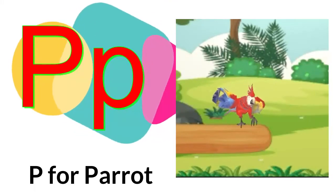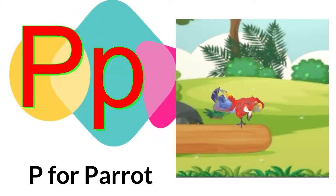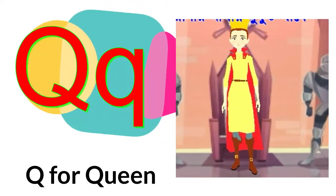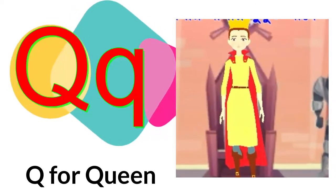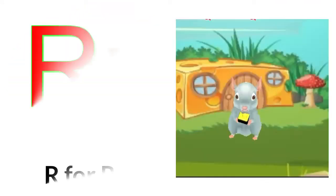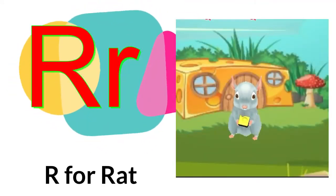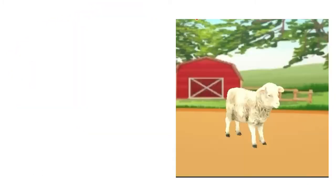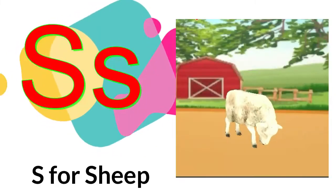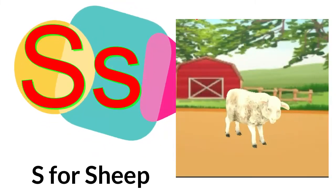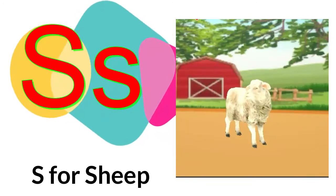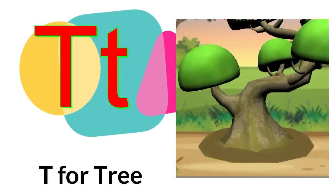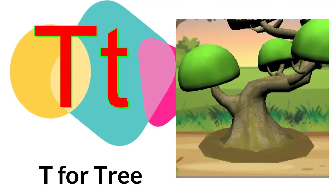P. P for parrot. Q. Q for queen. R. R for red. S. S for sheep. T. T for tree.